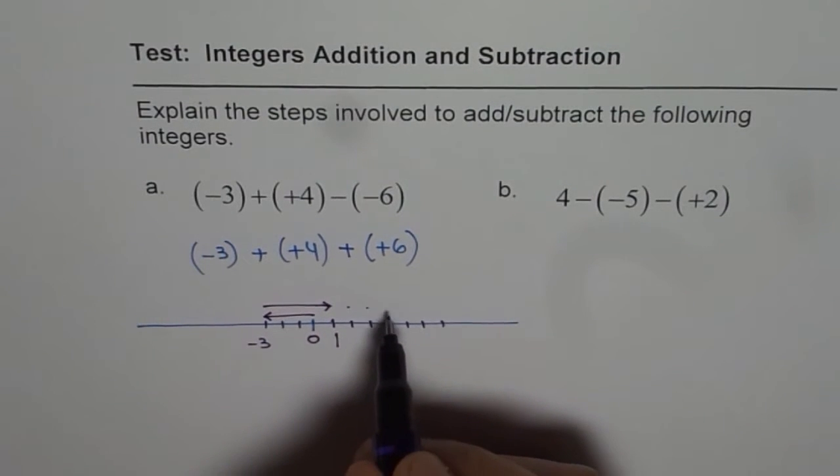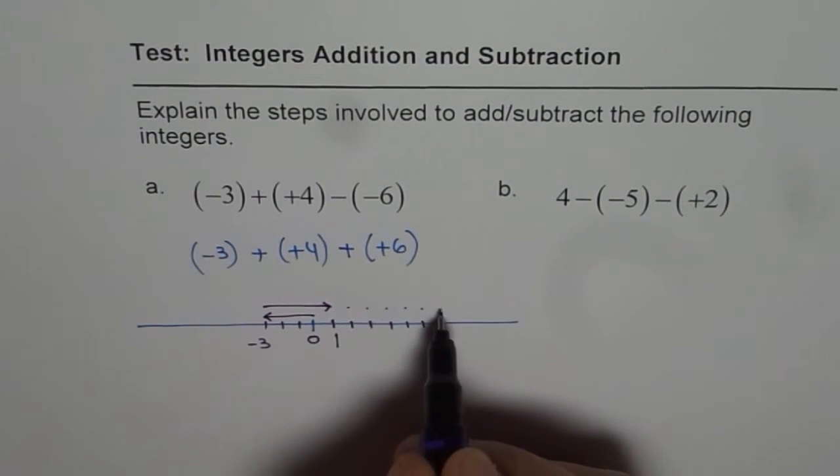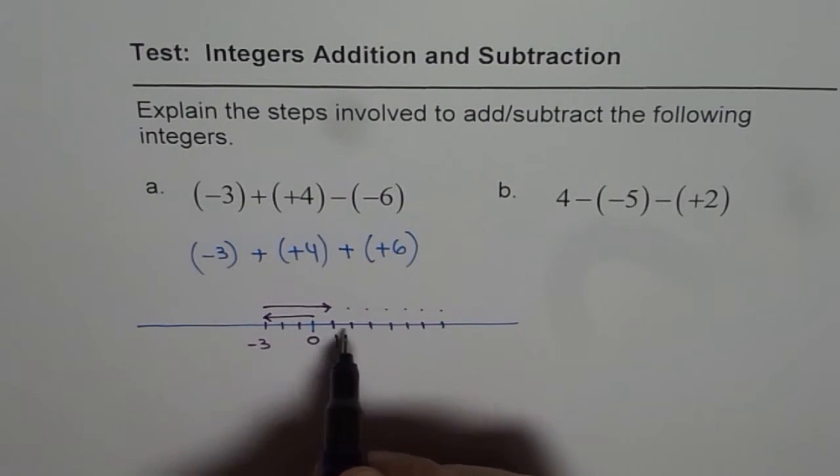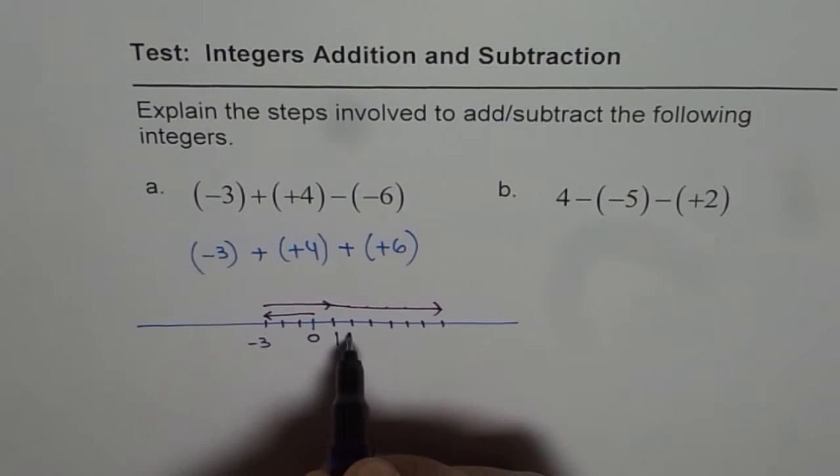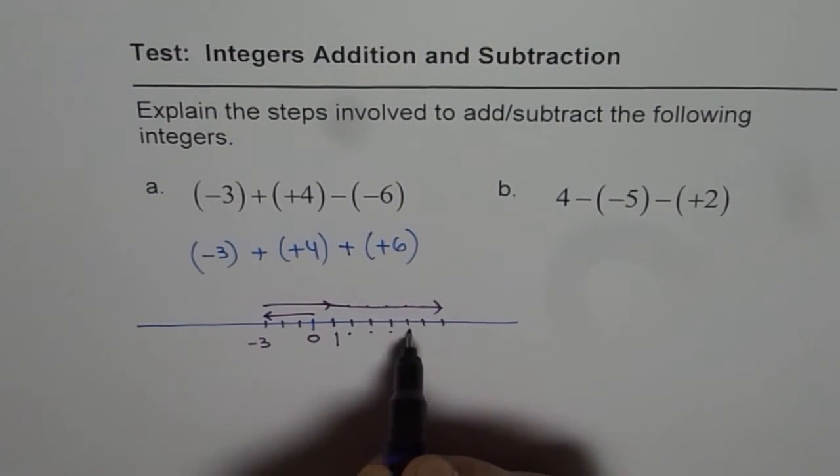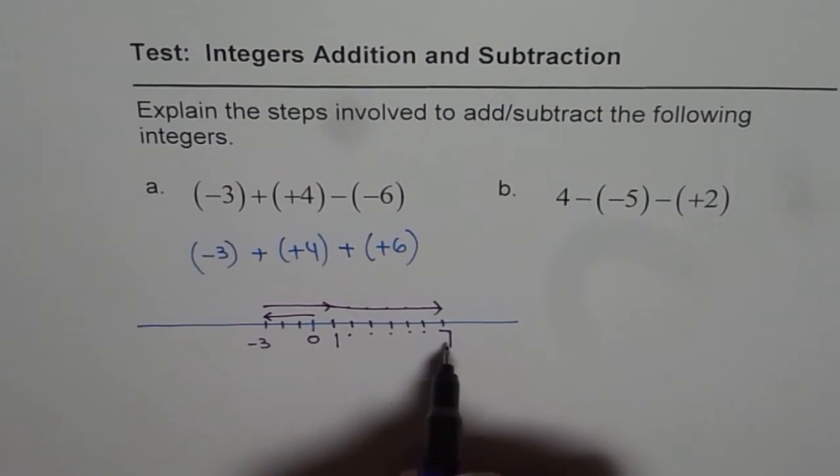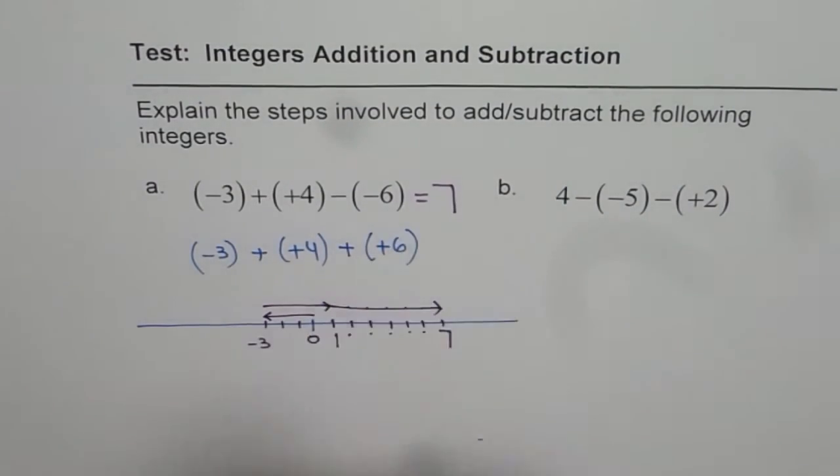That means one, two, three, four, five, six. So, if I go six more units from here, where do I reach? On the number line, I am at two, three, four, five, six, seven, right? So, the answer is this is equal to seven.